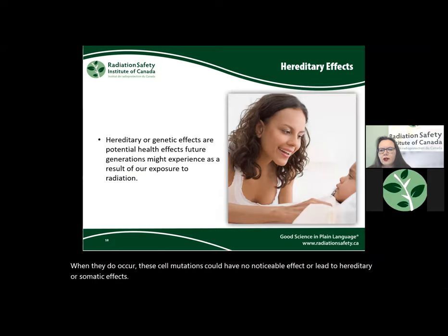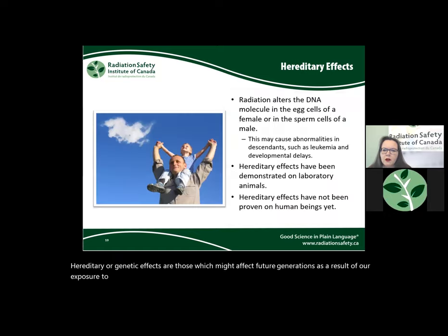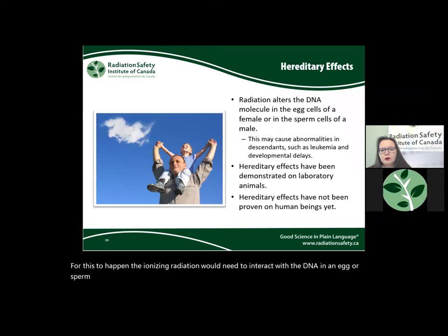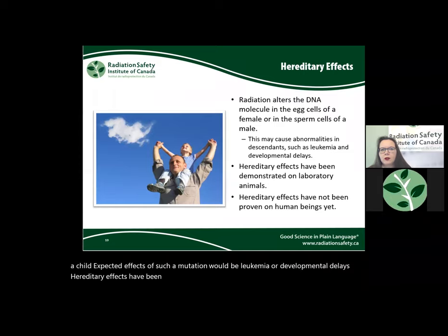Hereditary or genetic effects are those which might affect future generations as a result of our exposure to ionizing radiation. For this to happen, the ionizing radiation would need to interact with the DNA in an egg or sperm cell and cause a mutation, which would then be passed to a conceived child. Expected effects of such a mutation could include leukemia or developmental delays. Hereditary effects have been demonstrated in laboratory animals, but have not been found in humans.